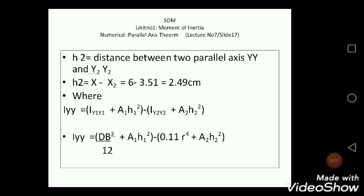Which is DB³/12, and Iy2y2 is nothing but 0.11r⁴. We have tried to solve this semicircle problem in which we had used this formula. So again, substituting the value.